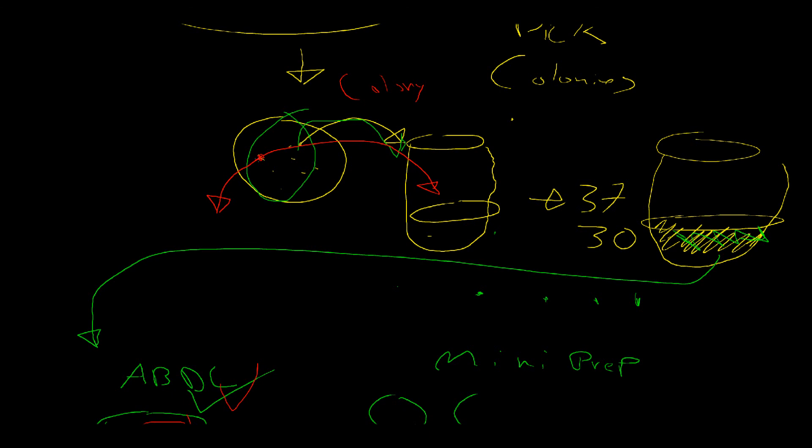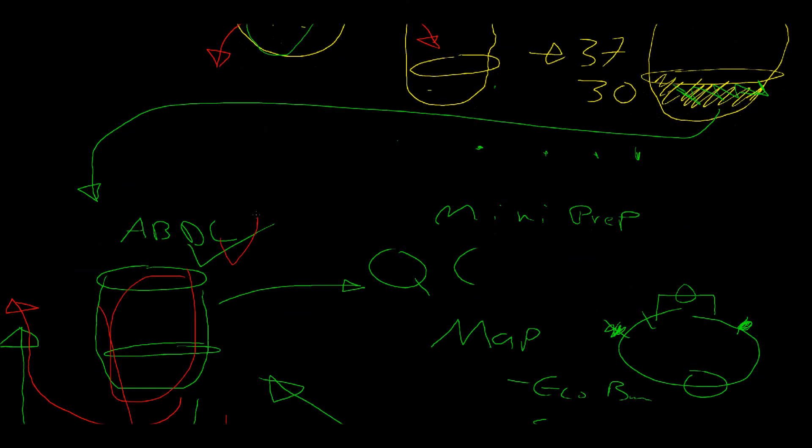And if you get a band that's the right size when you run the gel, when you run the contents of that PCR reaction, if you labeled your tubes right, you should know exactly which culture tube you want to go ahead and mini prep. And then you can just go on from there. That just gives you the answer a little bit earlier.